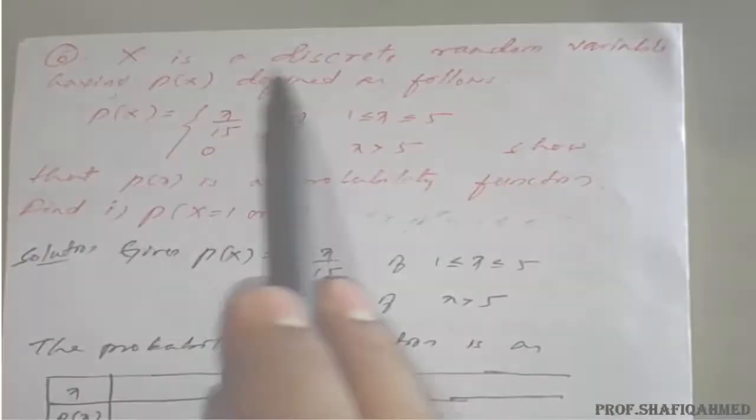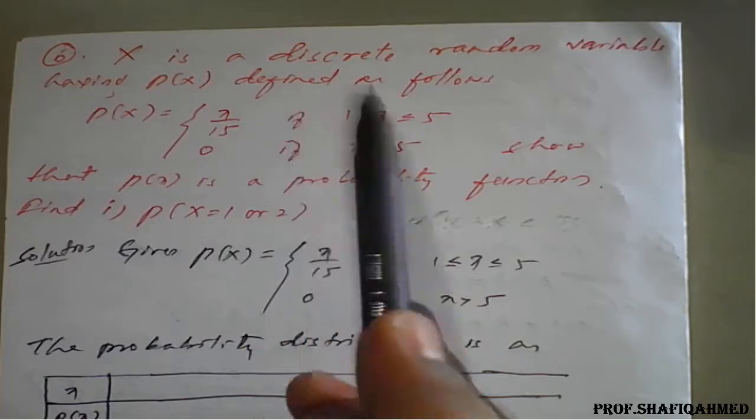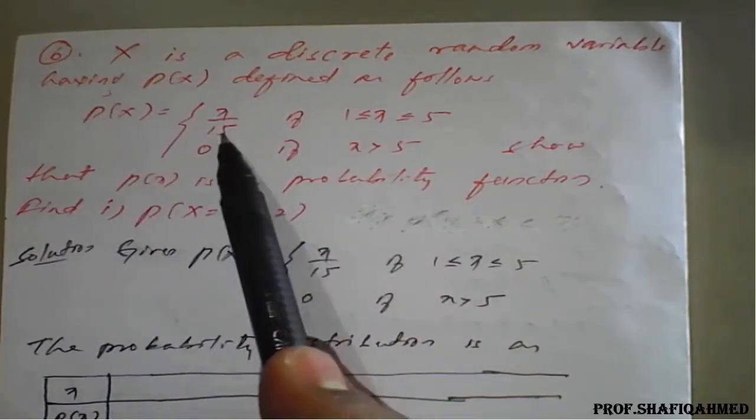X is a discrete random variable having P of X defined as follows. P of X is defined as X upon 15.